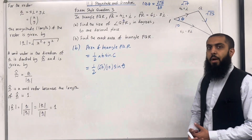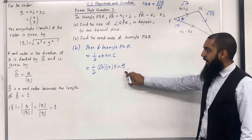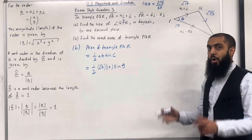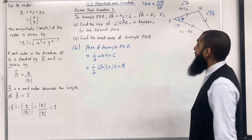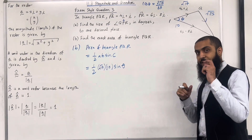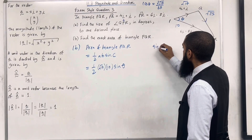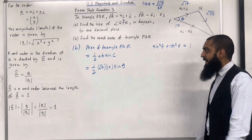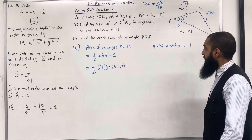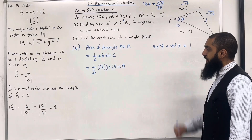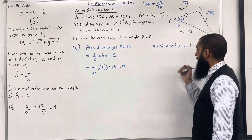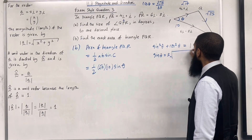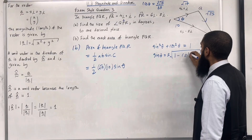We need to work out the exact value of sin θ. From part A, cos θ = 8√17/85. Using the identity sin²θ + cos²θ = 1, we rearrange to get sin θ = ±√(1 − cos²θ).